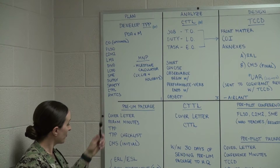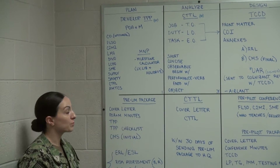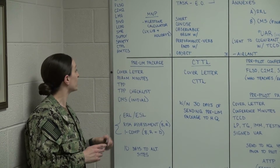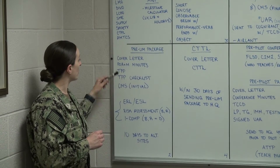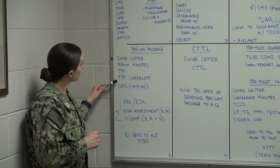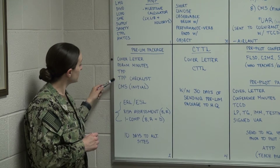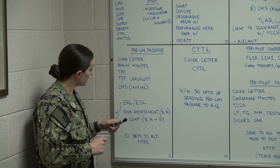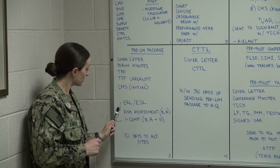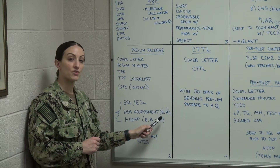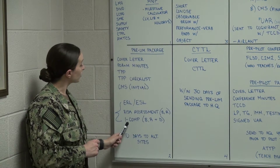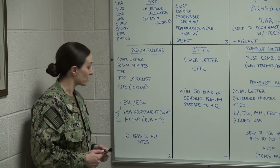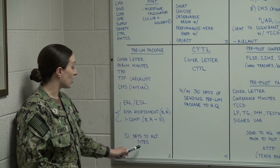From there we can start building our preliminary package. In our preliminary package we're going to need: a cover letter, our POAM minutes, TPP, TPP checklist, our course master schedule, initial equipment requirement list, equipment shortage list, risk assessment — which is done at the birth and revision of a course — and our instructor computation, which will be done at the birth, revision, and death of a course. This will be sent to our alternate sites for 10 days.